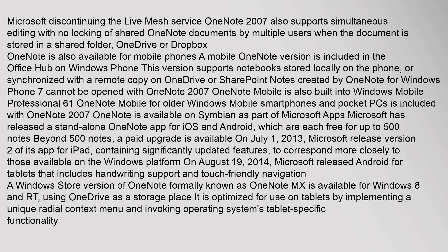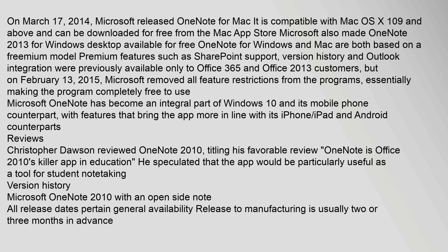Using OneDrive as storage, the Windows Store version is optimized for tablets with a unique radial context menu and operating system tablet-specific functionality. On March 17, 2014, Microsoft released OneNote for Mac, compatible with Mac OS X 10.9 and above, downloadable for free from the Mac App Store. Microsoft also made OneNote 2013 for Windows desktop available for free. OneNote for Windows and Mac are both based on a freemium model. Premium features such as SharePoint support, version history, and Outlook integration were previously available only to Office 365 and Office 2013 customers, but on February 13, 2015, Microsoft removed all feature restrictions, essentially making the program completely free. OneNote has become an integral part of Windows 10 and its mobile counterpart.